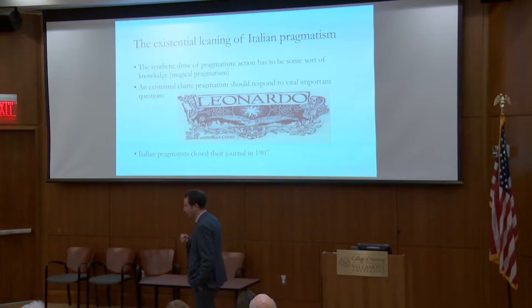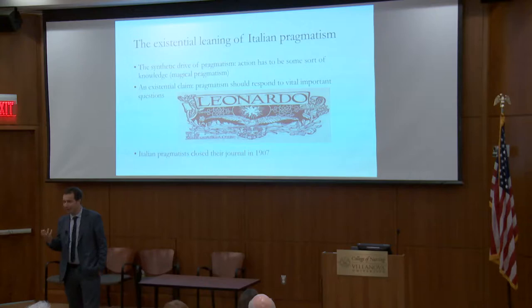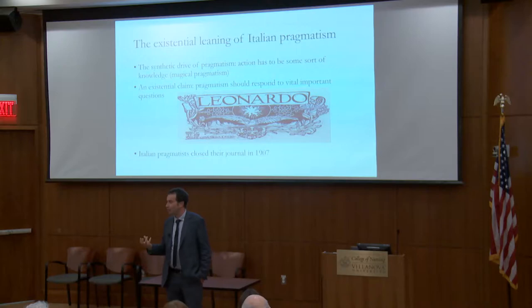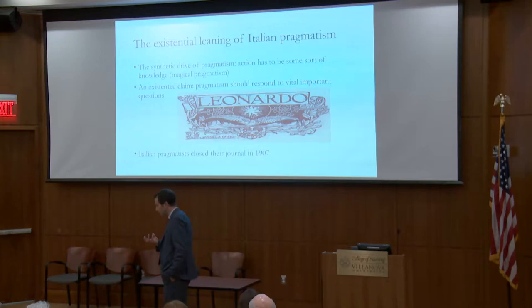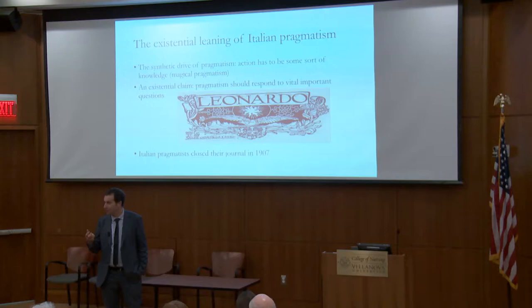Moreover, the Italian pragmatists added something not in the original American version: they tried to use pragmatism to solve vitally important problems, like the meaning of life. They were somewhat disappointed at the end, finding the philosophy couldn't fully answer those questions. But they contributed something very important — an existential leaning: the idea that pragmatism should be good for science and logic, but must also be true for me personally, for my ordinary life.